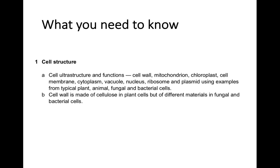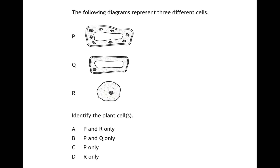What I am going to do next is there is going to be a selection of past paper questions. I will explain them. Once I have explained them, I would like you to pause the video, answer it, then I will go through the answer. In this first multiple choice question, you have been given three different cells P, Q, and R. The question is asking you to identify the plant cell or plant cells. A is P and R only, B is P and Q only, C is P only, and D is R only. Pause the video and give it an answer.